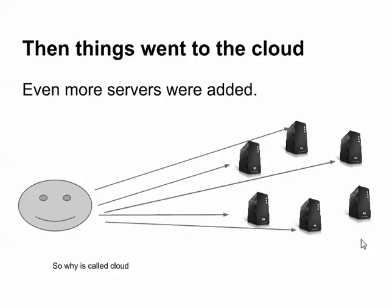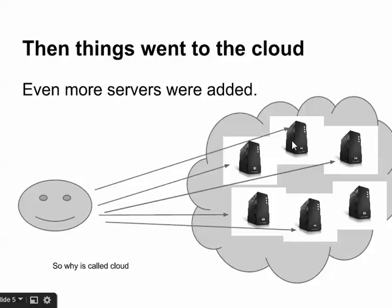Then we moved into the cloud. As you can see, there are more and more servers. We started distributing each component of the server out to different servers — for instance, the file storage piece, the traffic distribution node or router, a database server, and a front-end web server. Now we have more redundancy required because we have more points of failure. But if you look at the shape of the servers, it starts to look a little bit like a cloud — and that's why they call it cloud services.